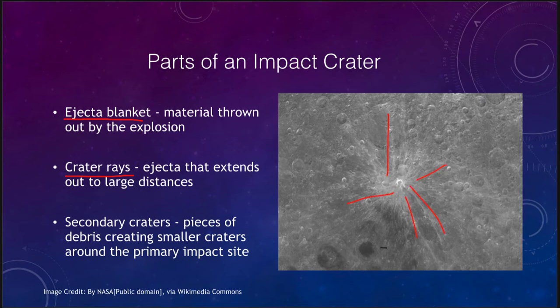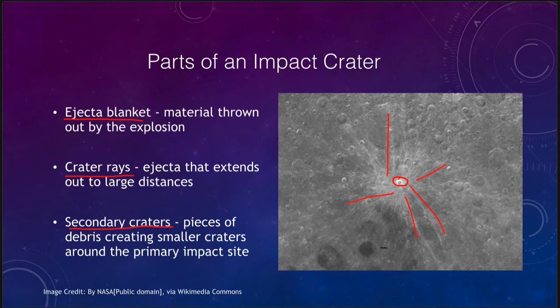All of these rays are ejecta that extend very large distances across the surface of the moon. So the ejecta blanket is the material right near the crater, the crater rays are the material thrown further out, and then many of the rocks that come out will form secondary craters — smaller craters around the initial crater from the debris thrown out in the massive explosion.